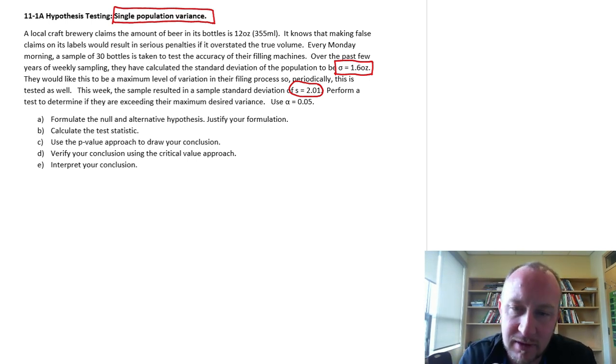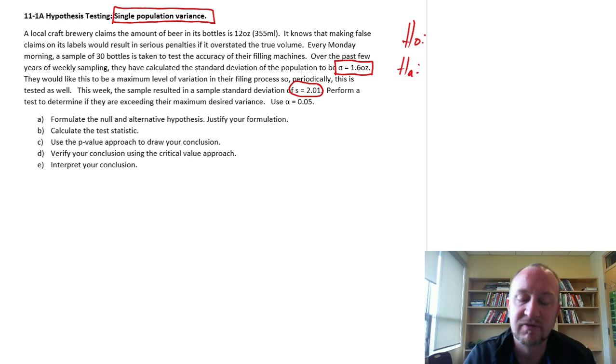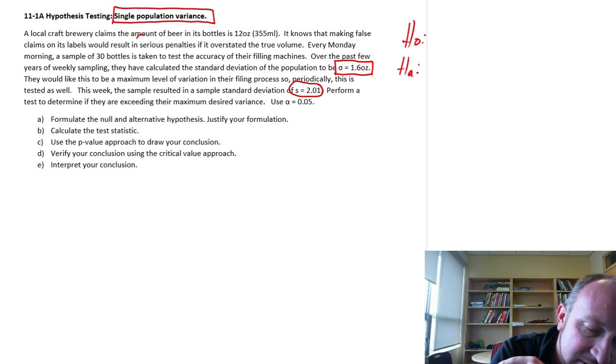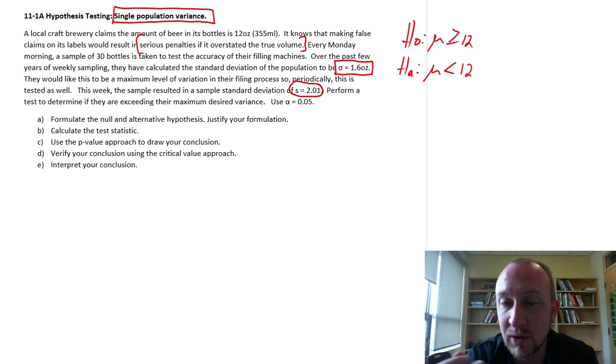So why is this important? Well, when we were performing the test on means, we wanted to know were they at risk of serious penalties. It would be at risk of serious penalties if they overstated the volume. So we performed a test to see if they were under filling those bottles. They said that they had 12 ounces, we wanted to see do they have 12 ounces or are they filling them less than 12 ounces. So we had a lower tail test for that exercise. Now we want to test the variance.